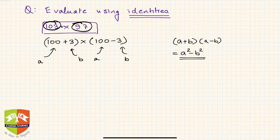Very good! Looks like we can reduce this expression in form of a²-b². So a was 100, so it will become 100², and b was 3, so it will be 3². Now it becomes very easy to calculate. 100² is 10,000 and 3² is 9.